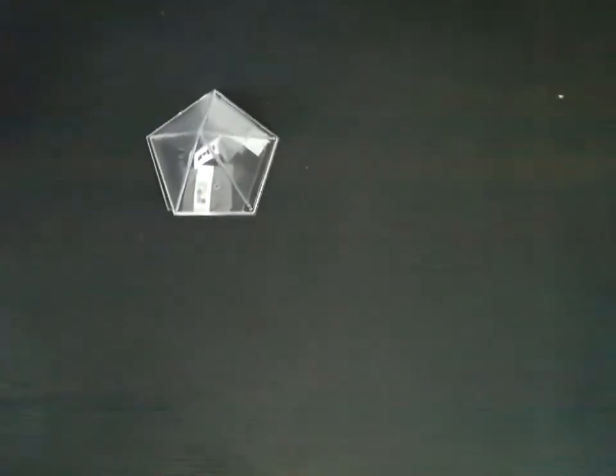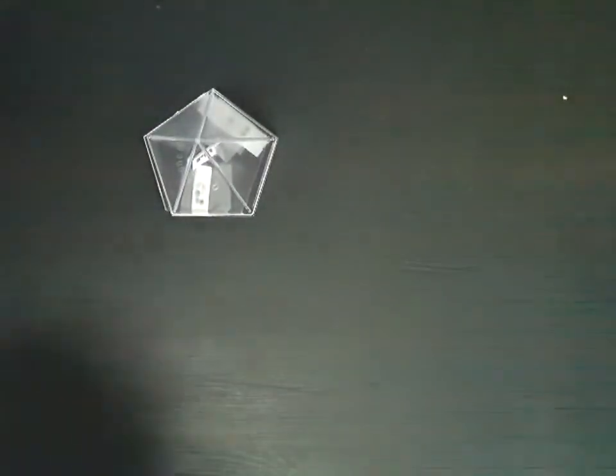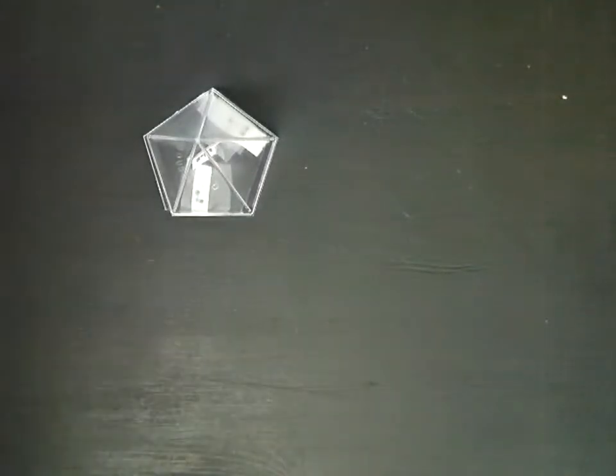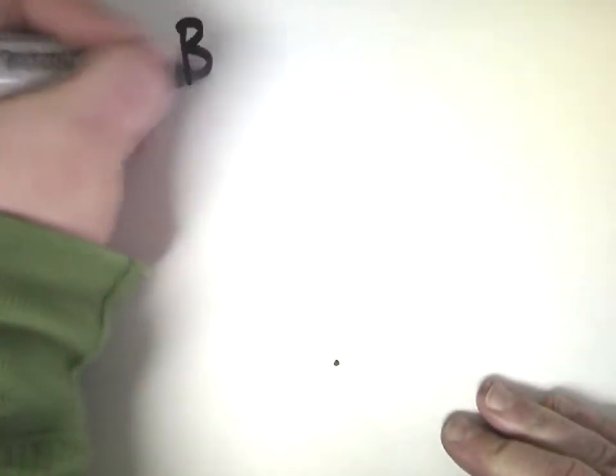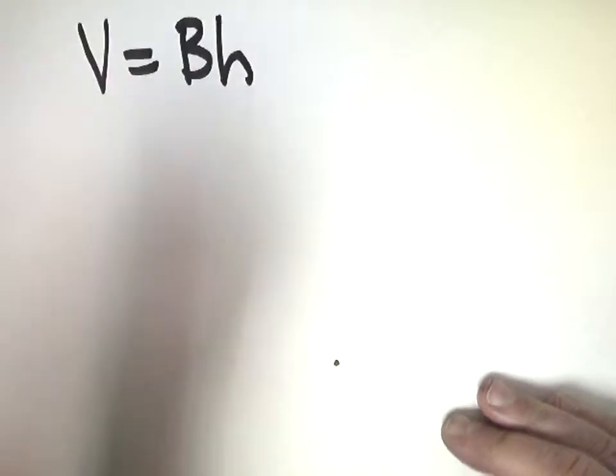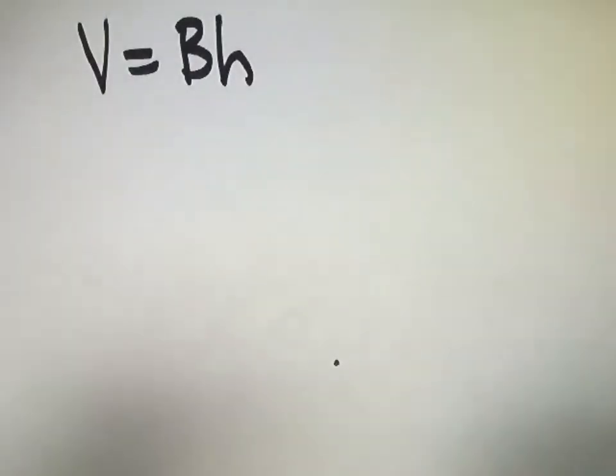Now, let's get to the formula itself. So the formula for volume, I'm going to move this out of the way for a second, is big B times height. And big B refers to the area of the base, and we'll talk about that in just a minute.